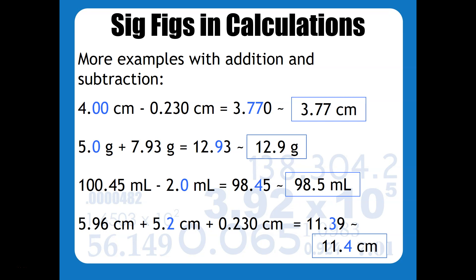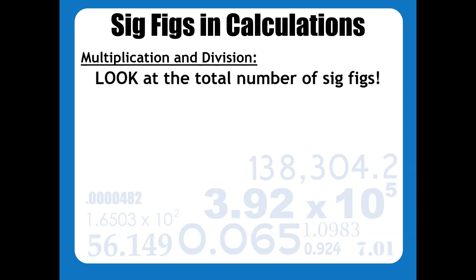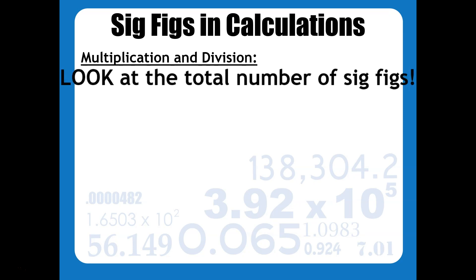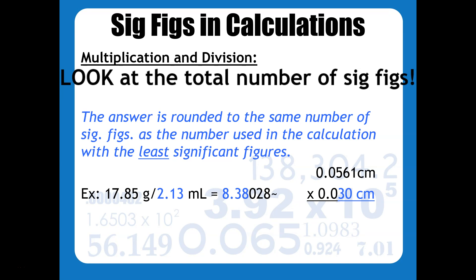Are you ready for multiplication and division? For multiplication and division, instead of focusing on decimal places we're actually focusing on the entire number — the total number of sig figs. This is why it was important to learn how to identify the number of sig figs first. When doing multiplication and division, your answer is rounded to the same number of sig figs as the number used in the calculation with the least sig figs — not decimal places. So for example, this has a total of four sig figs and this has a total of three, therefore the answer can only have three total.